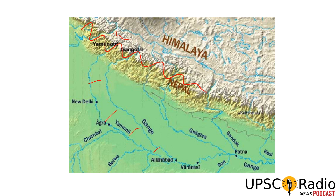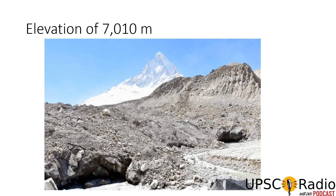Here we will discuss the block diagram showing how a river flows and its parts. The Ganga River is at an elevation of 7,000 meters above sea level. Approximately, this is the Gangotri glacier. From here, the Ganga River originates. When a river melts and comes down as a river, it descends from the mountain top.